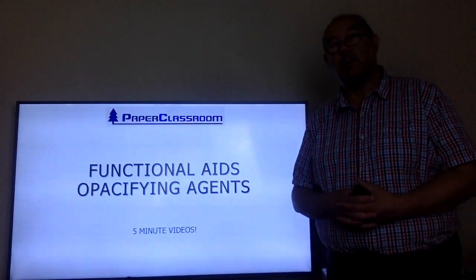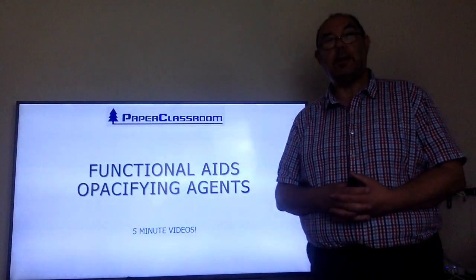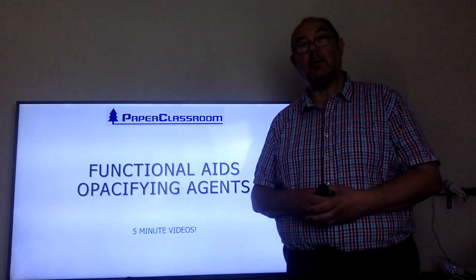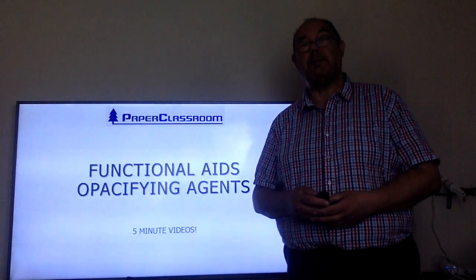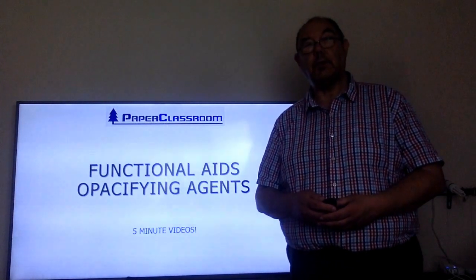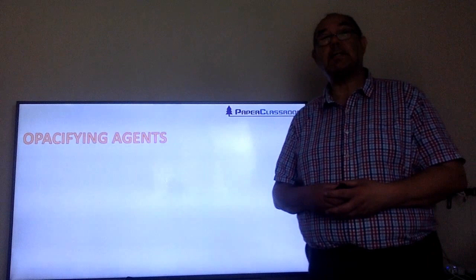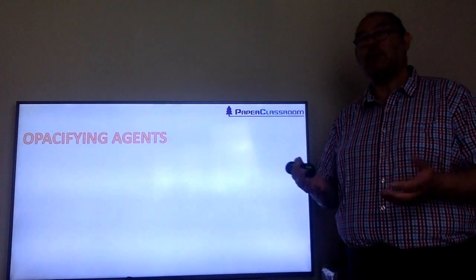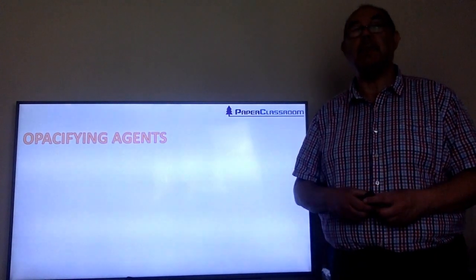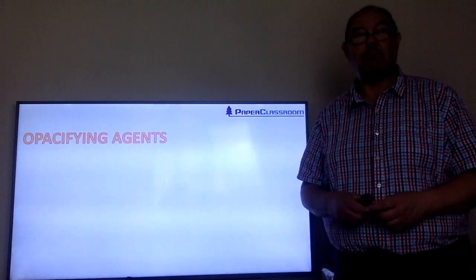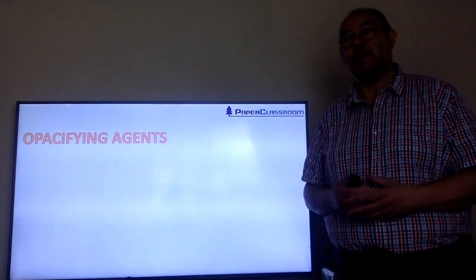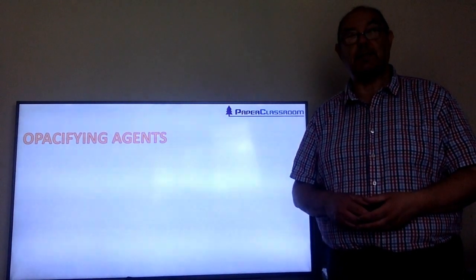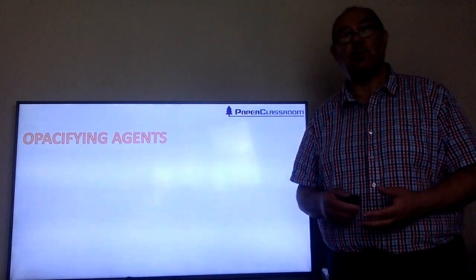Hello and welcome to another level 3 video. Today we're going to be talking about opacifying agents. Opacifying agents are put into a sheet to improve the printability of the sheet — as the name implies, generally by improving the opacity of the sheet, but they do other things as well.